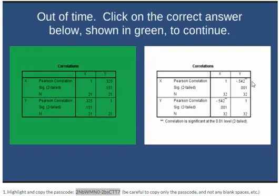So we have two different SPSS outputs. The one on the left has a Pearson's R value of 0.325 and the one on the right has a Pearson's R value of negative 0.542. And for this activity you're to click on the SPSS output that represents the weakest correlation. So whichever one is closest to zero is the weakest correlation.